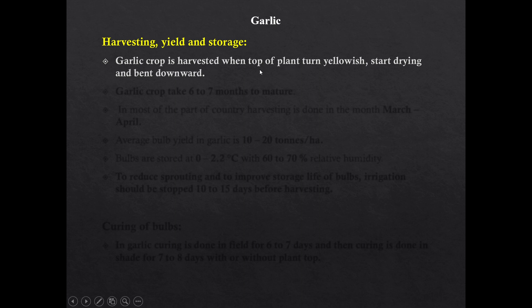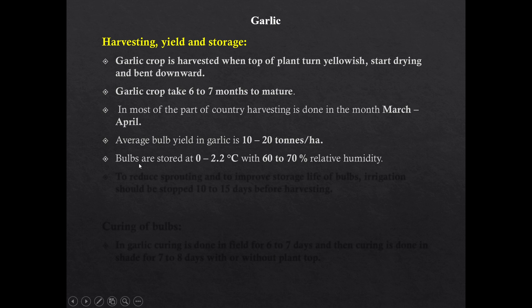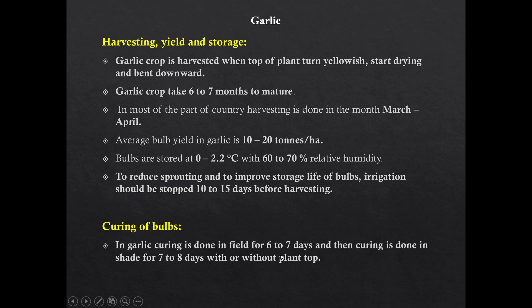Harvesting, yield, and storage of garlic: Garlic crop is harvested when the top of the plant turns yellowish, starts drying, and bends down. Garlic crop takes 6-7 months to mature. In most parts of the country, garlic harvesting is done in March-April. Average bulb yield in garlic is 10 to 20 tons per hectare. Garlic bulbs are stored at 0 to 2.2 degree Celsius with 60-75% relative humidity. To reduce sprouting and improve storage life, irrigation should be stopped 10-15 days before harvesting. Curing of garlic is done in field for 6-7 days, then in a shed for 7-8 days with or without leaves attached.